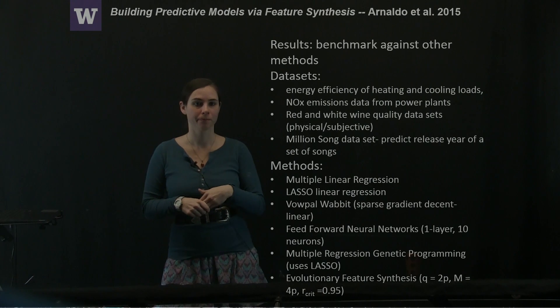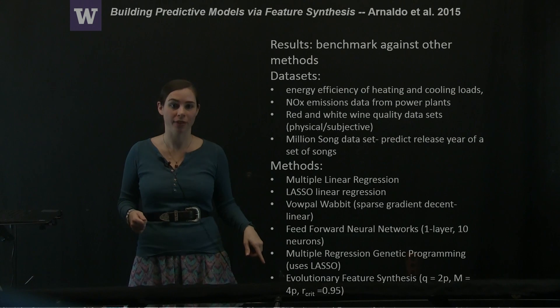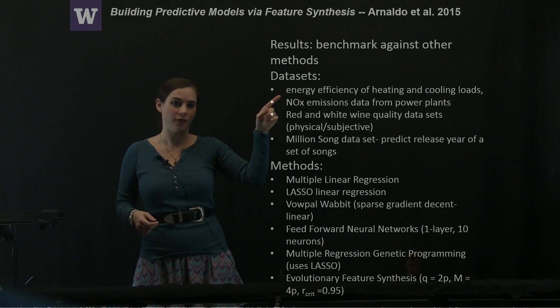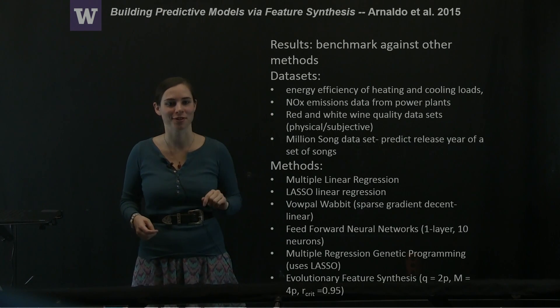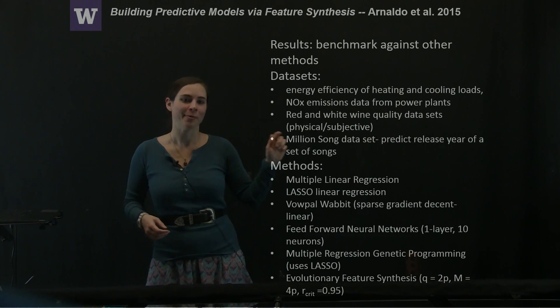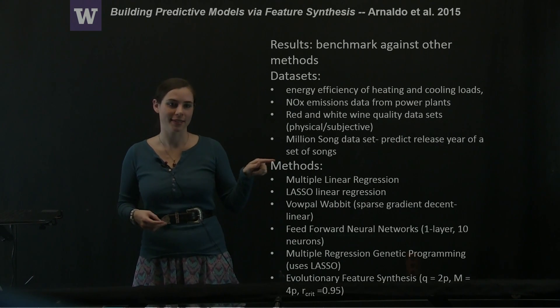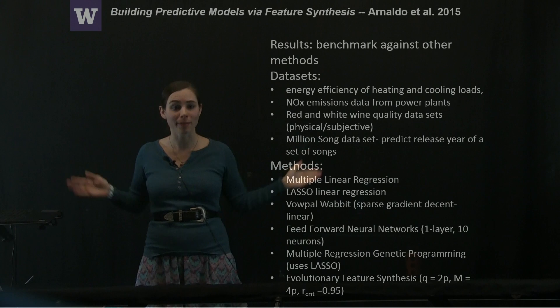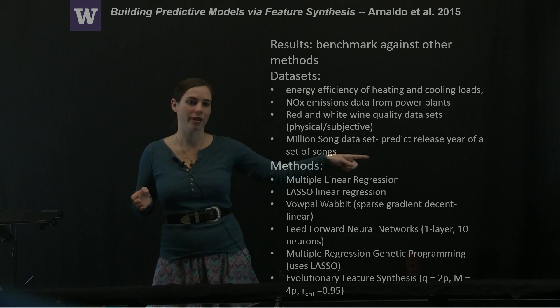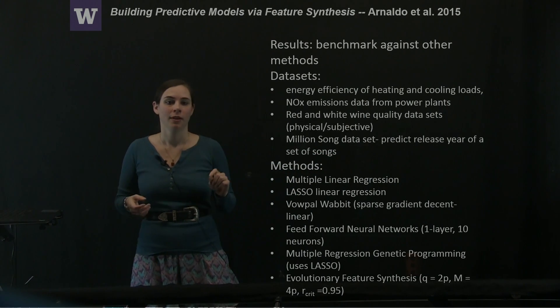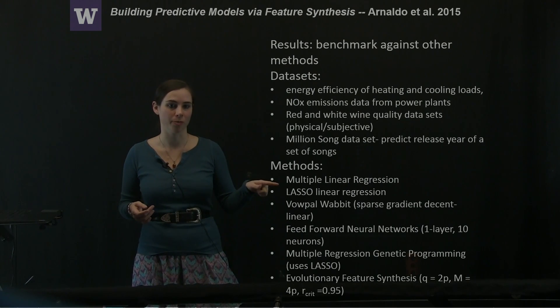The authors benchmark this method on a number of different datasets against a number of different other methods. The datasets include energy efficiency of heating and cooling loads, NOx emissions, red and white wine quality datasets. This one's interesting because not only are there physical measurements of the wine, but there's also subjective measurements of how people view the wine. And then the million song dataset was a challenge, an enormous dataset, and the challenge was to use the information in the dataset to try and predict the release year of some set of songs.